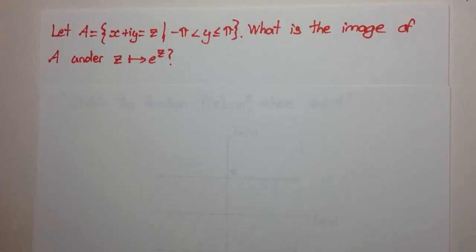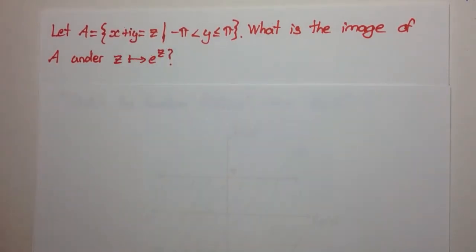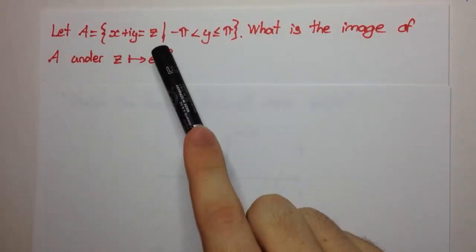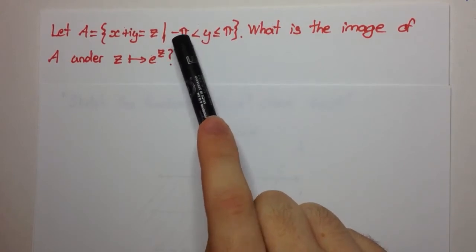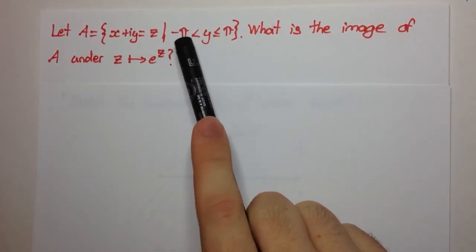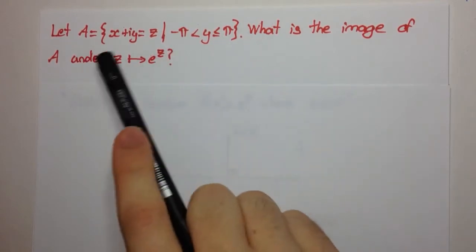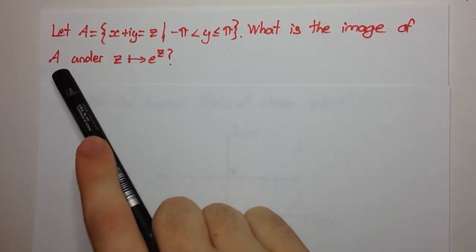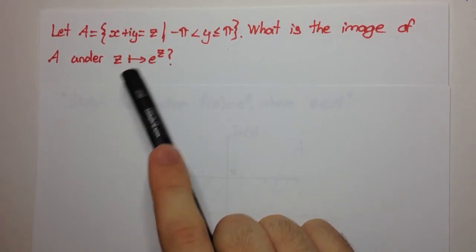Welcome to today's video. Let A be the set of all complex numbers of the form Z equals X plus iY, such that the Y value is between minus pi and pi, not including minus pi. What is the image of A under the mapping Z maps to e to the Z?